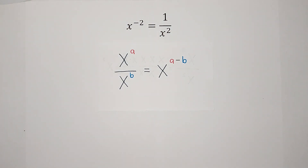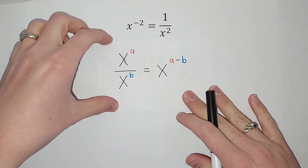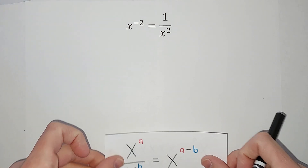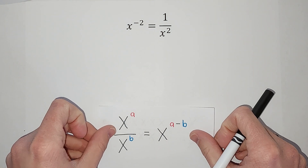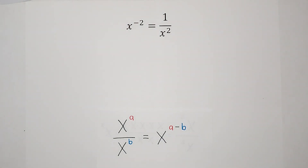When you have two exponents with the same base being divided by each other, you subtract the exponents to get your answer. If you're not familiar with that, I'll link a video, but I'm assuming you're probably familiar with it. So we believe this is true — hopefully we can agree on that.